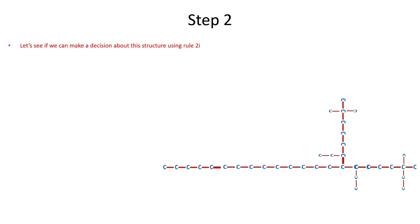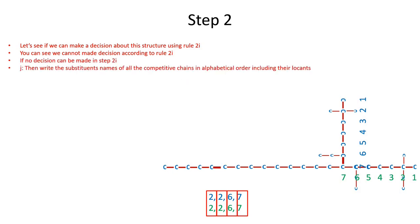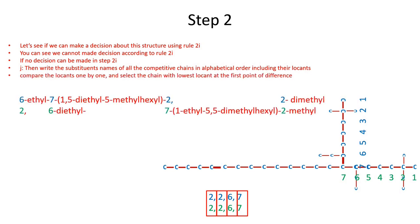Let's see if we can make a decision about another structure. Number both chains and write down the locants of substituents and compare them one by one. The position of the first, second, third, and fourth substituents are all the same — we cannot make any selection using this criteria. If no decision is made, write down the substituent names in alphabetical order including their locants, compare the locants one by one, and select the chain with the lower locant at the first point of difference. Here the chain with green numbers has a lower locant — that is our parent chain.